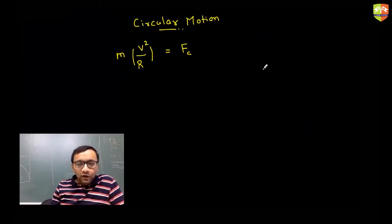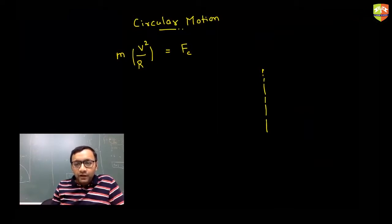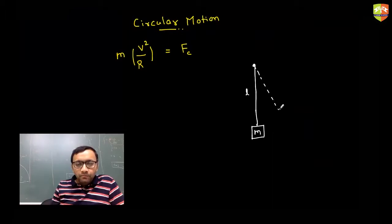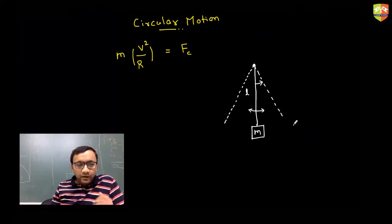Consider a mass m hanging on a string of length l. If you give it a very small velocity, it will oscillate left and right like a pendulum. This is the basic low-velocity scenario where the mass simply swings back and forth without completing a circle.